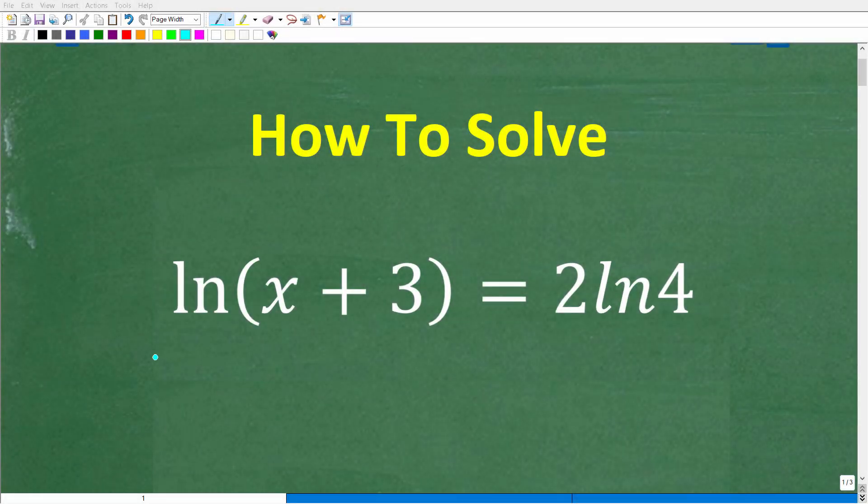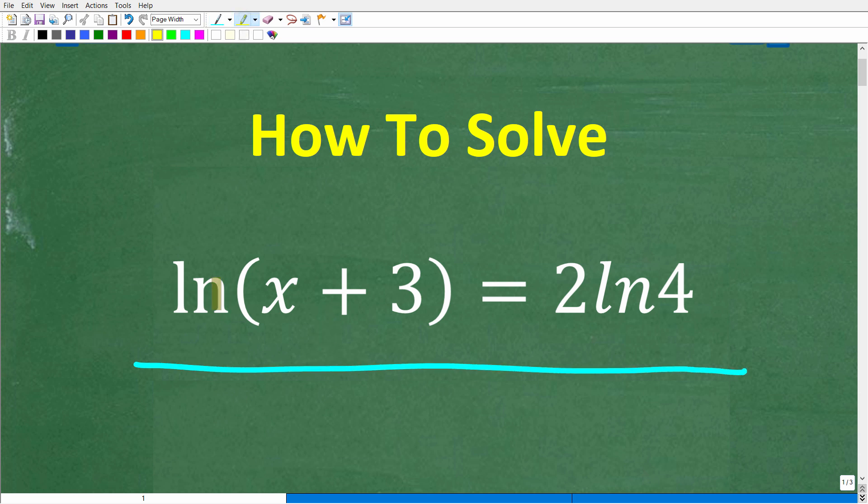Okay, so let's learn how to solve this equation step by step. Now I'm going to teach you how to solve for x. We have ln(x + 3) = 2ln4. And this type of equation in math is called a logarithmic equation.